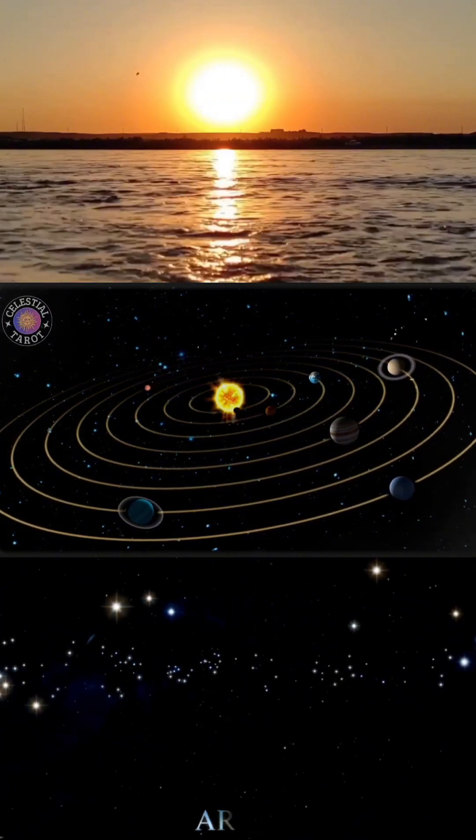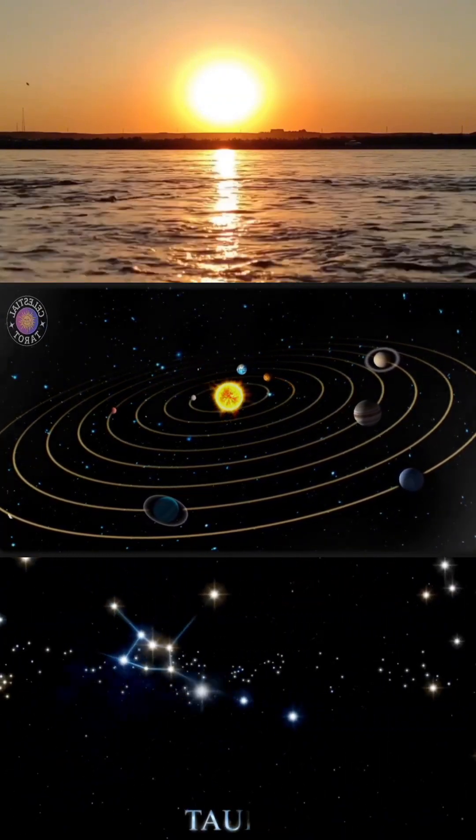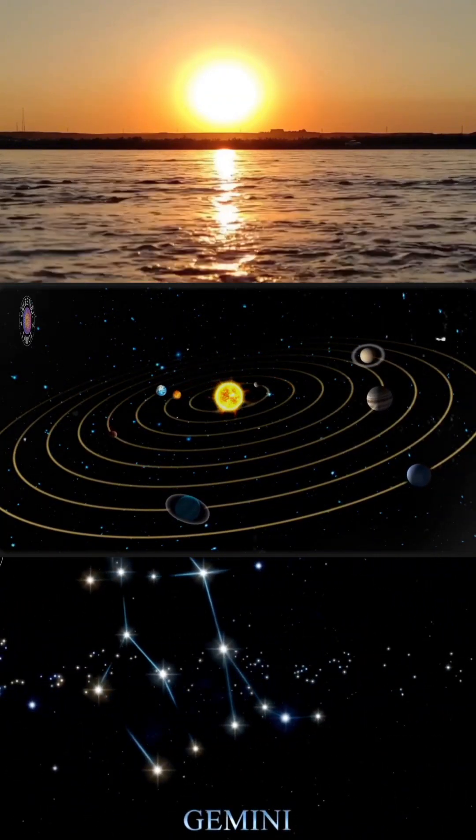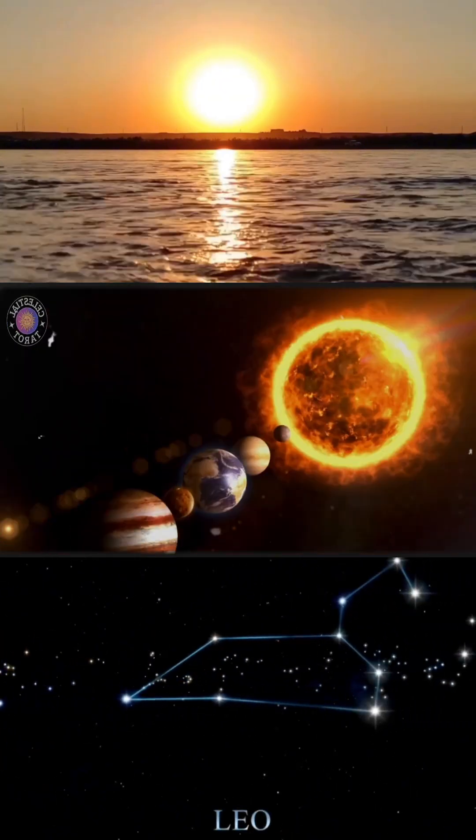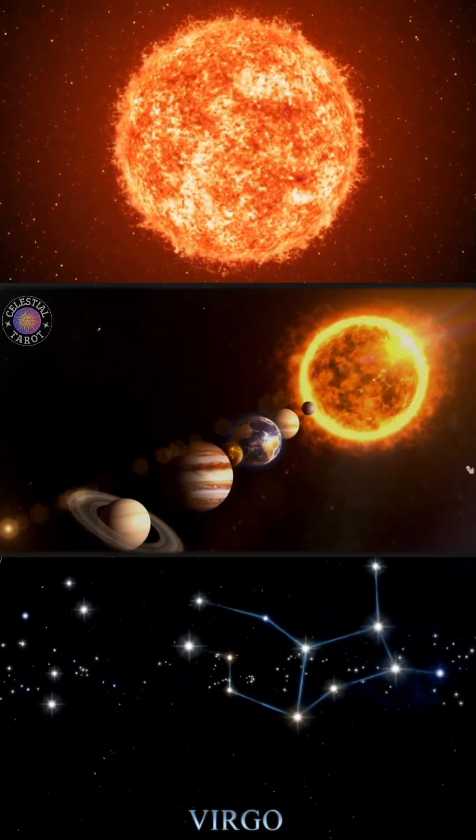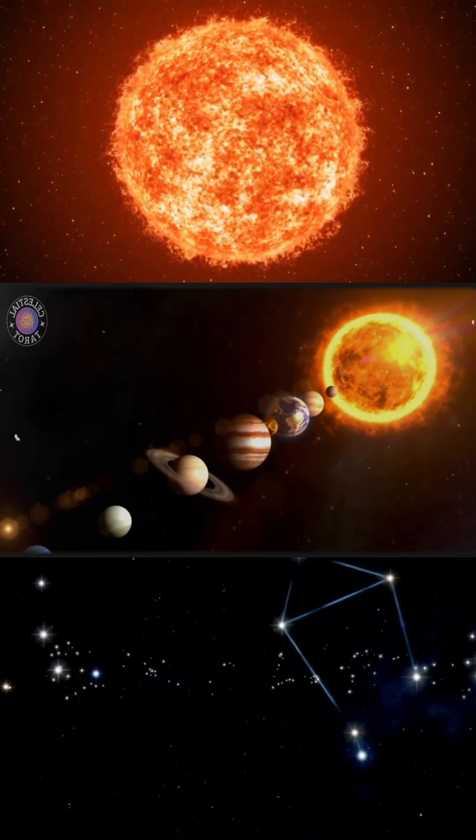The ecliptic is a line where the plane described by the Earth's orbit around the sun crosses the celestial sphere. This is why the zodiac is the region of the sky where we find the planets and the disk of our solar system.